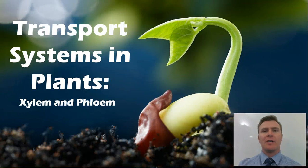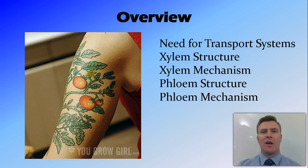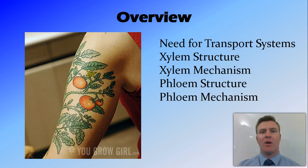In this video we're going to look at transport systems in plants. We're first going to talk about the need for transport systems and then look at the two different types of transport vessels, the xylem and the phloem. We'll look at the structure and mechanism of movement for each.